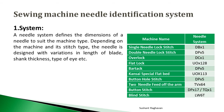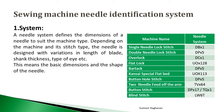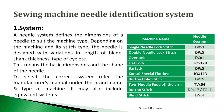Further systems include: Concise special flat bed — UO 113; Buttonhole stitch — DP5; Two needle feed off the arm — TV64; Button stitch — DP17 or TQ1; Blind stitch — LW60. The system defines the basic dimensions and shape of the needle. To select the correct system, refer to the manufacturer's manual under the brand name and type of machine. It may also include equivalent systems.